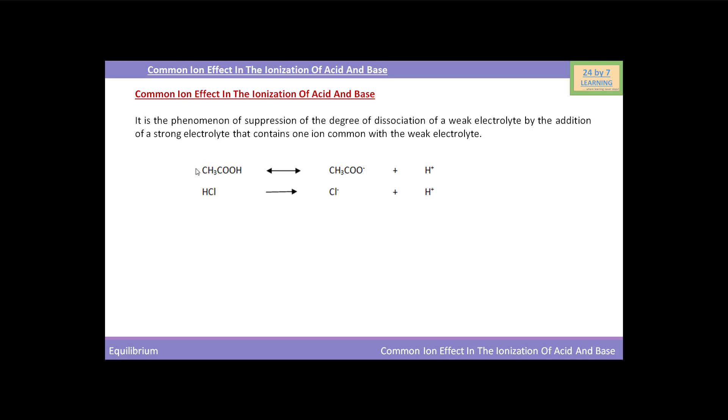As we know, acetic acid is a weak acid and HCl is a strong acid. According to the common ion effect, the degree of dissociation of weak electrolyte, that means degree of dissociation of acetic acid, is suppressed by the addition of a strong electrolyte.